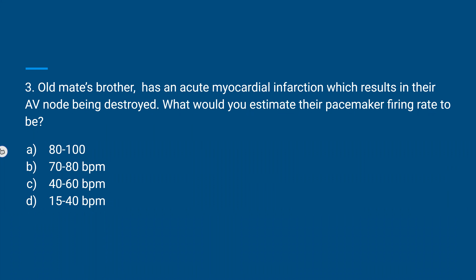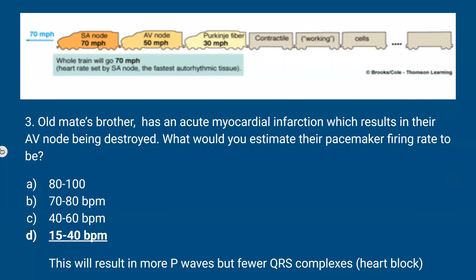Old Bay's brother also has a myocardial infarction resulting in AV node destruction. Even though the SA node is intact, impulses are blocked at the AV node. This results in more P-waves but fewer QRS complexes on the ECG — you will study this as heart block.